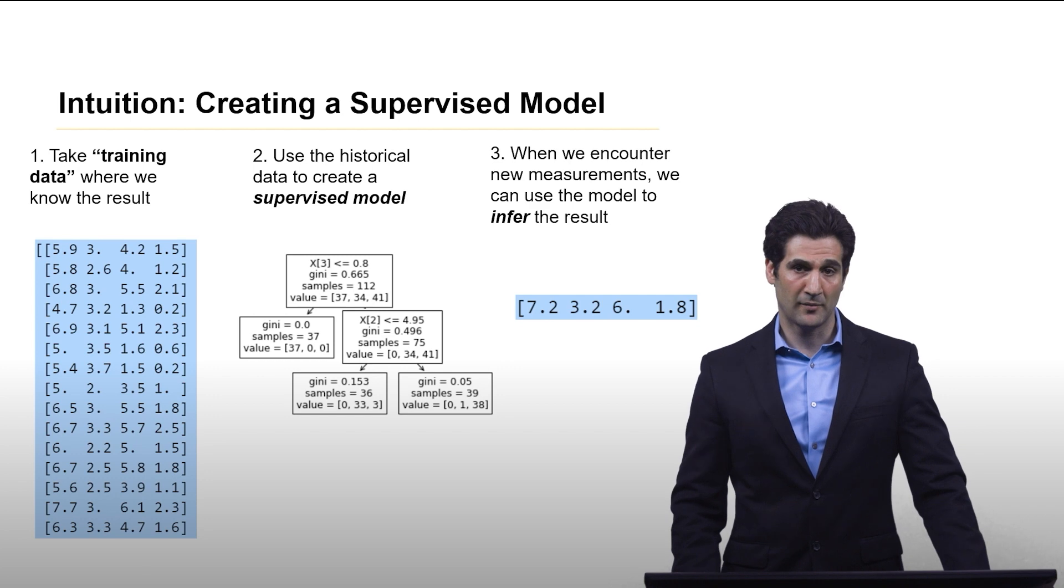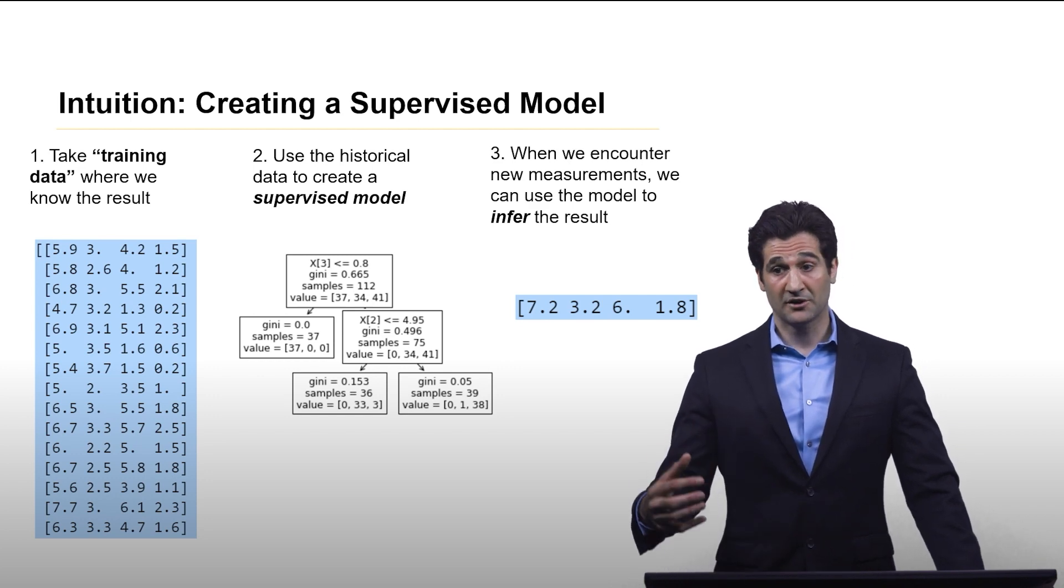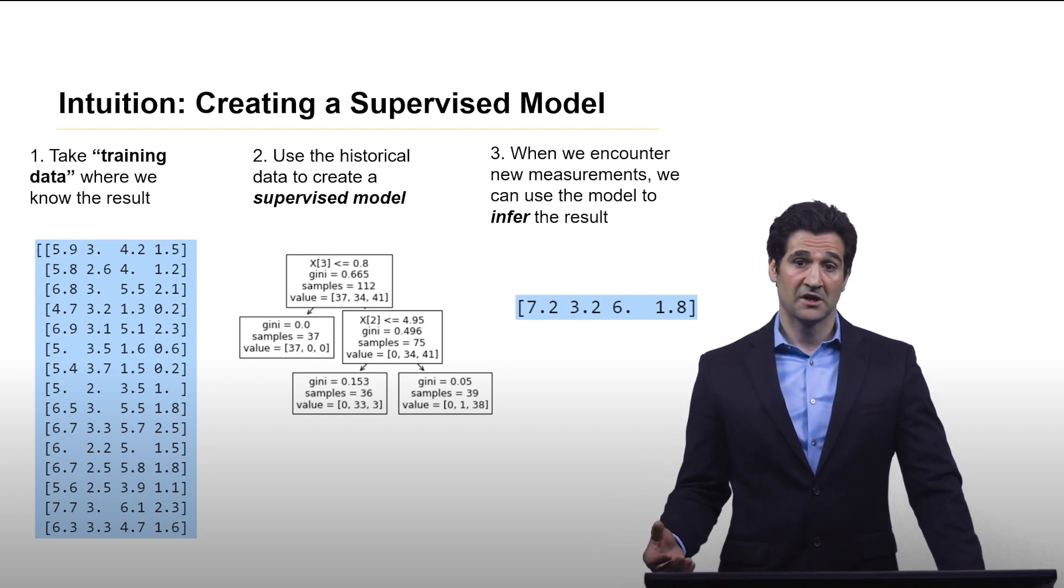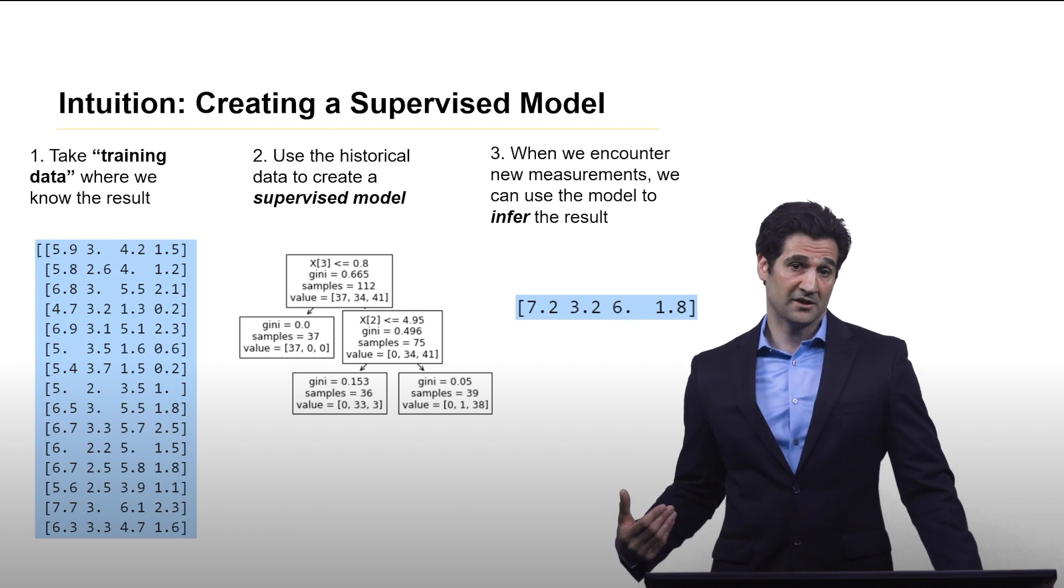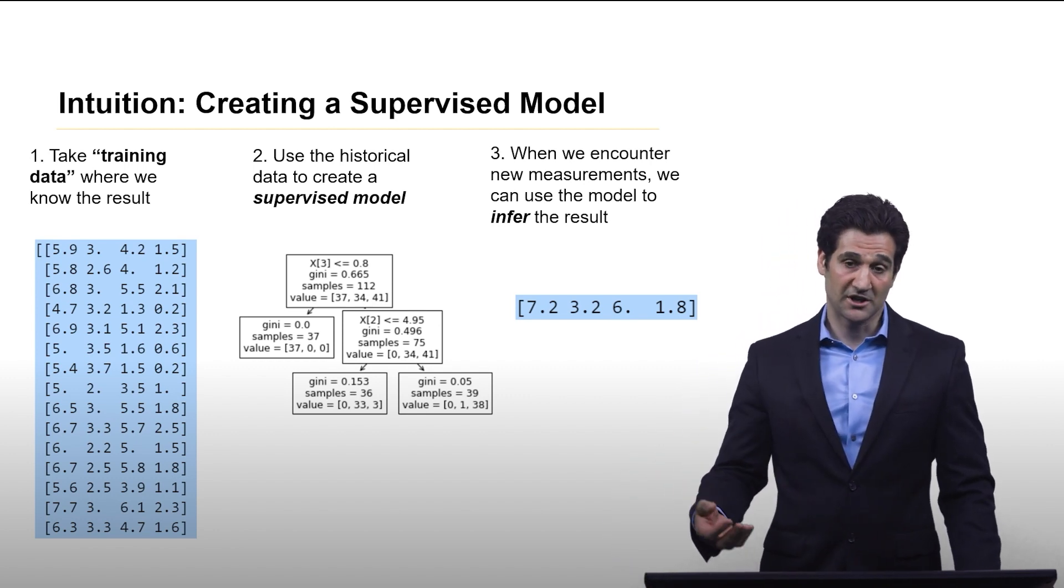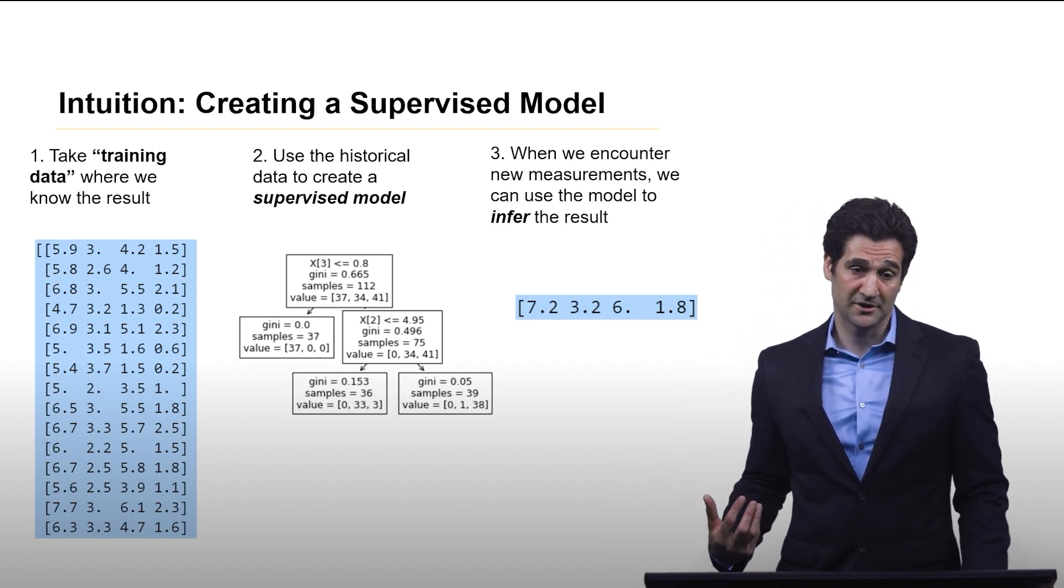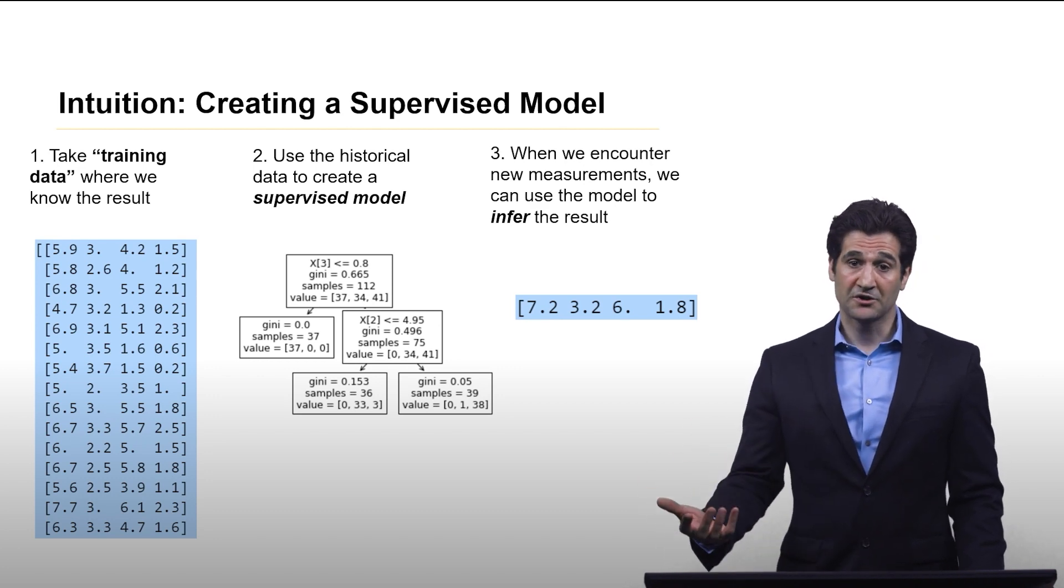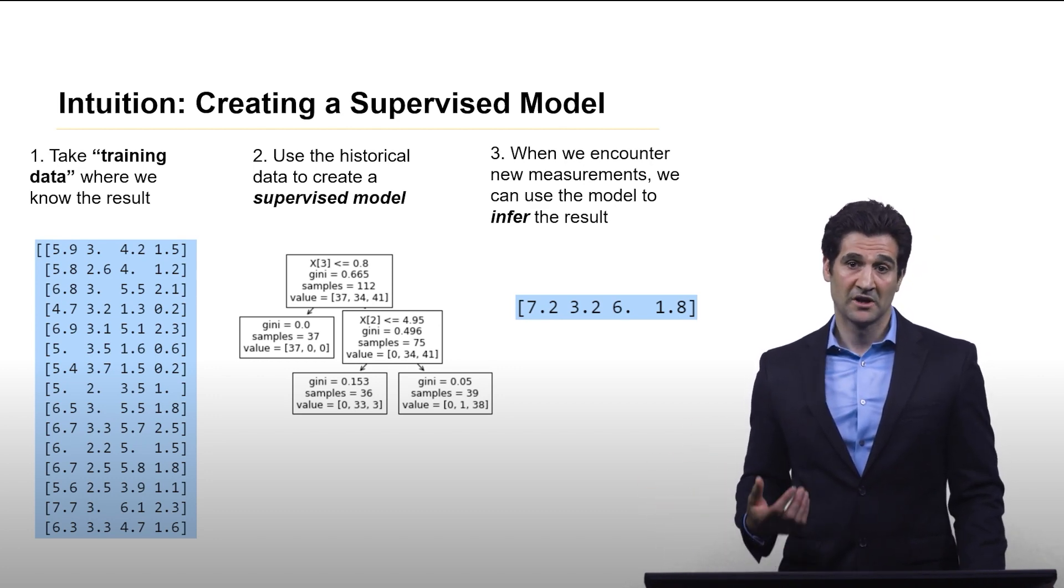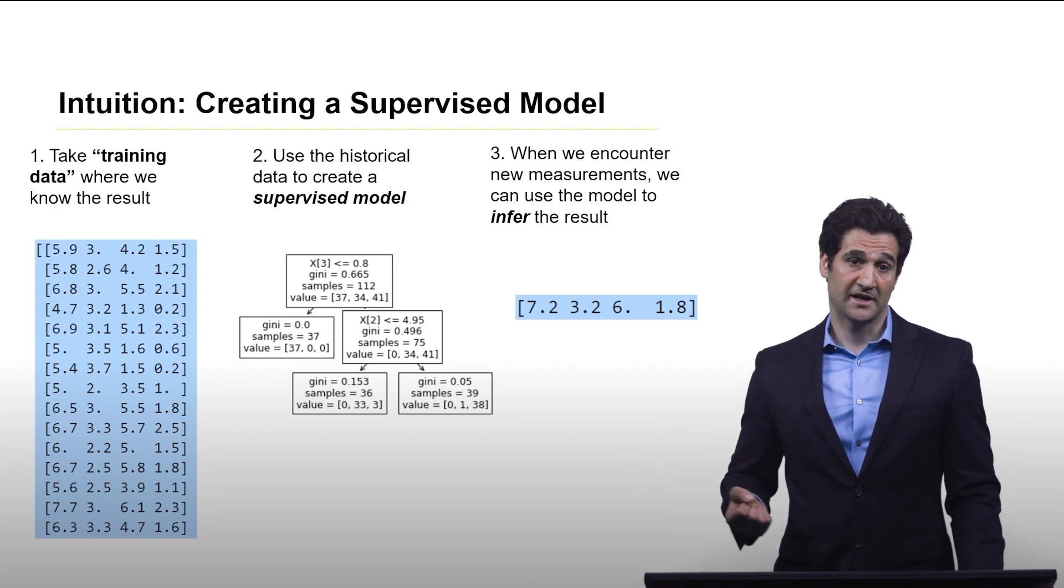Once we have that model, that model is what gets used operationally. As you see new data, say a new flower that all you have is the measurements of, you want to be able to infer what species of iris it is. That's where you use the model to do that step.